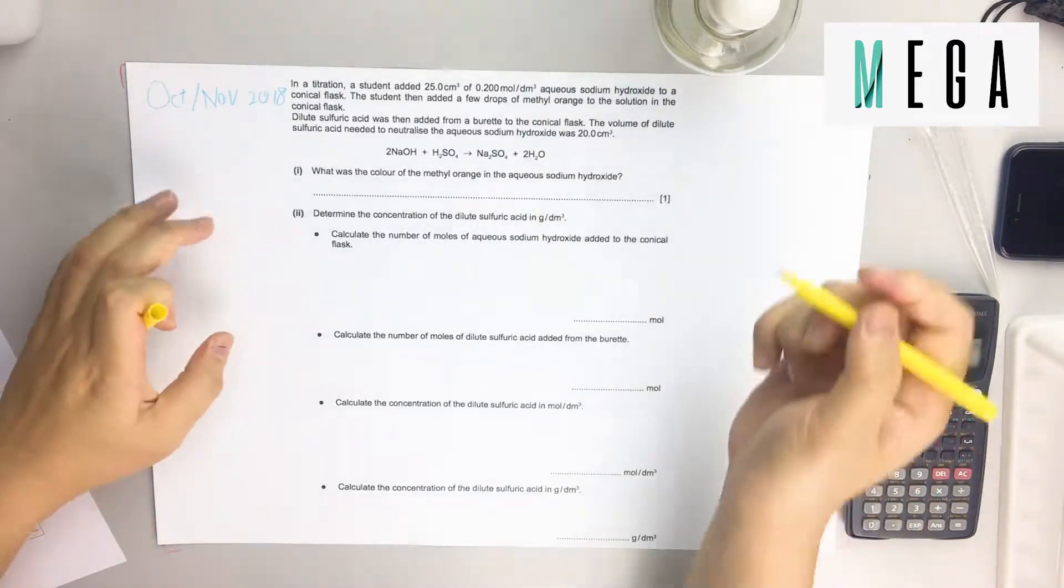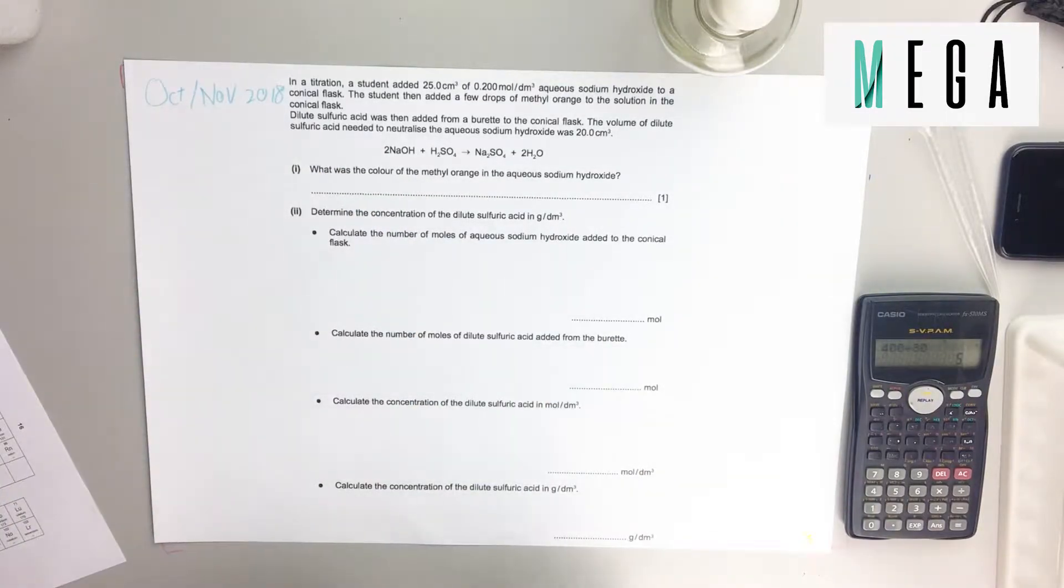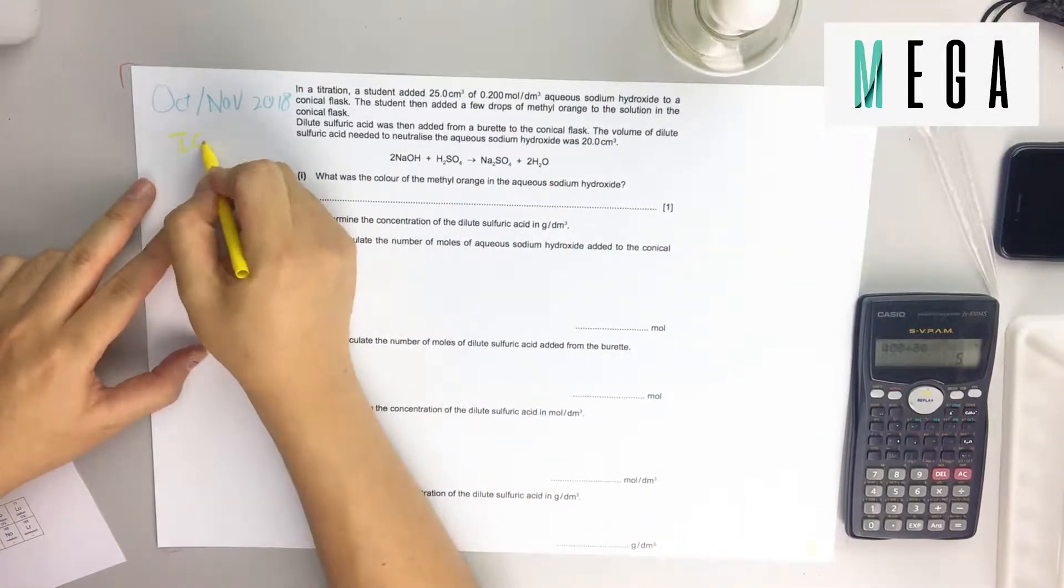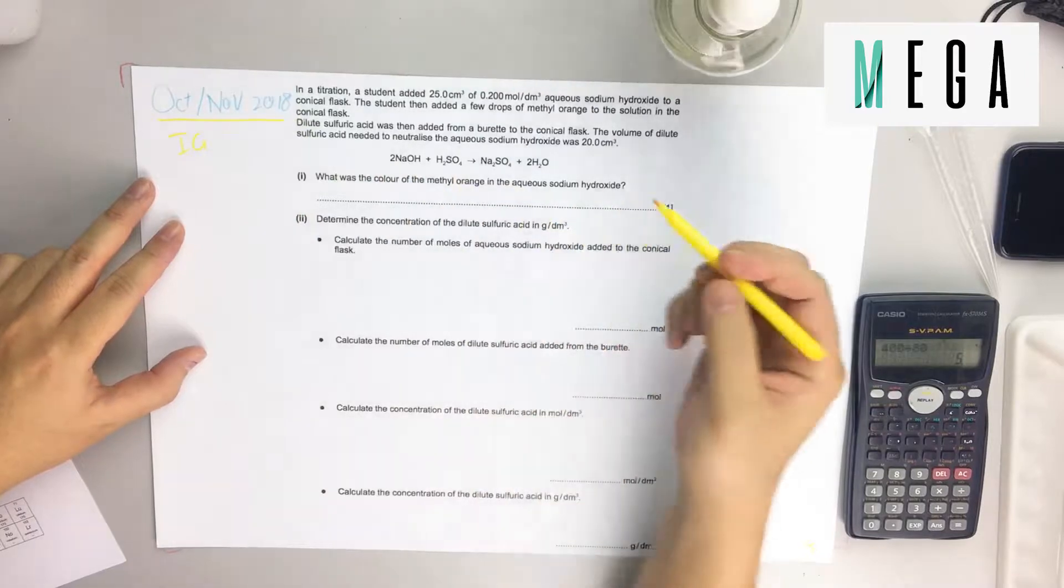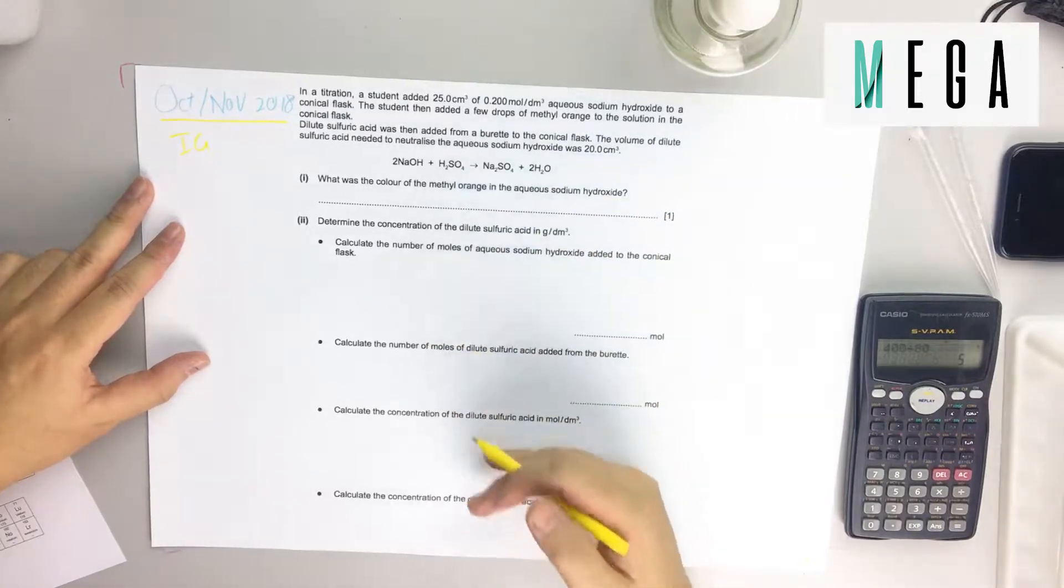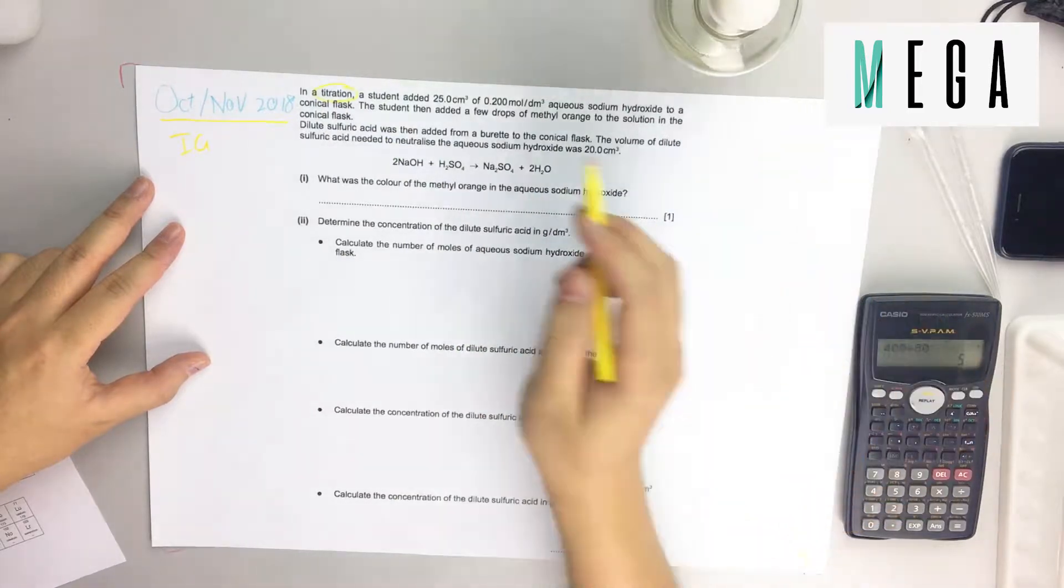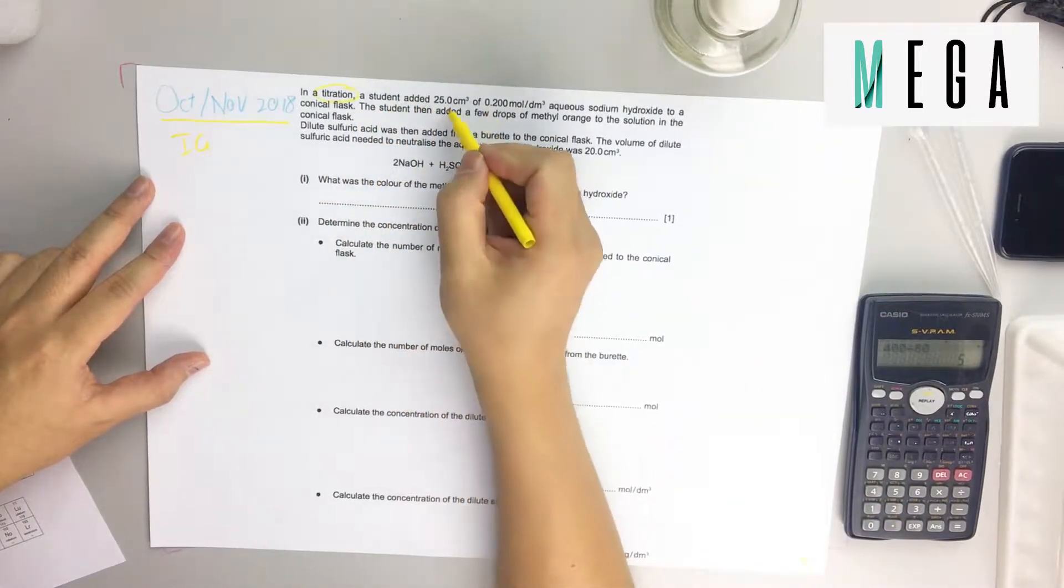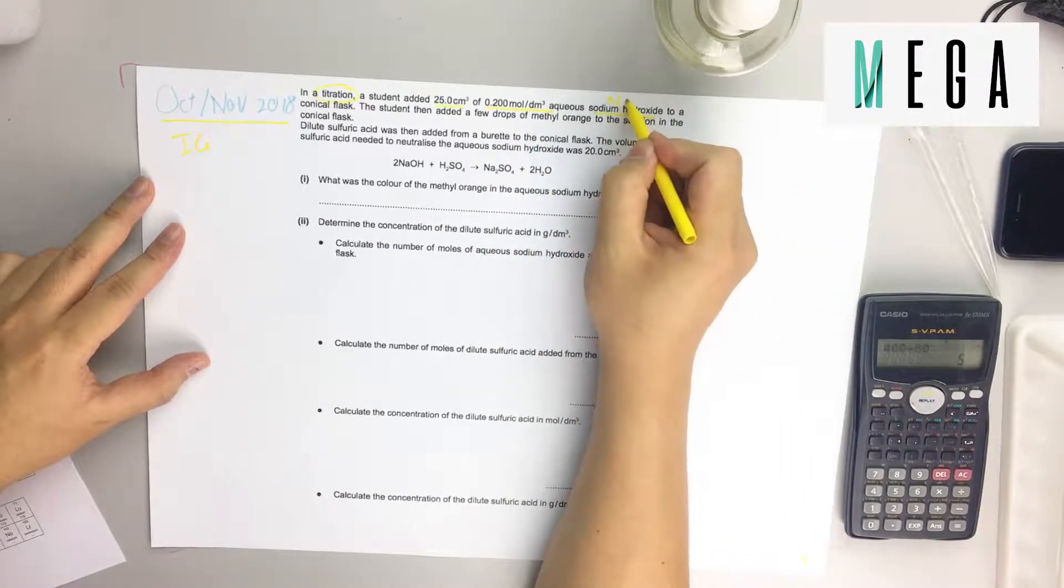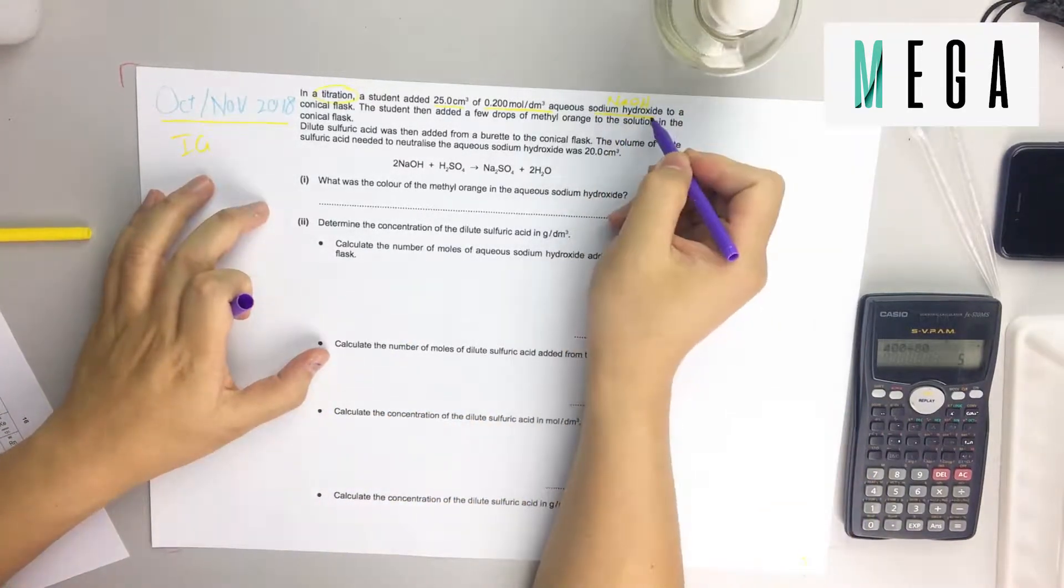This is another popular IB question from October/November 2018. Very similar to before, they break it down for you. We must show the steps clearly and they give the equation. From here it's a titration question. A student added 25 cm³ of 0.2 mol per dm³ sodium hydroxide.